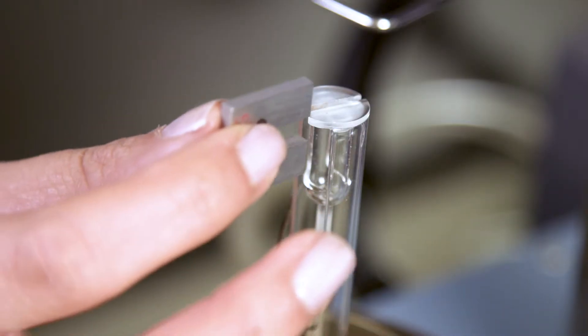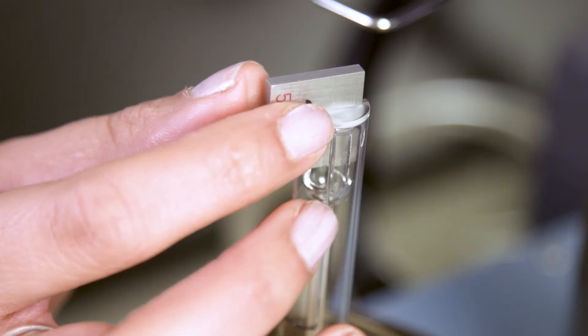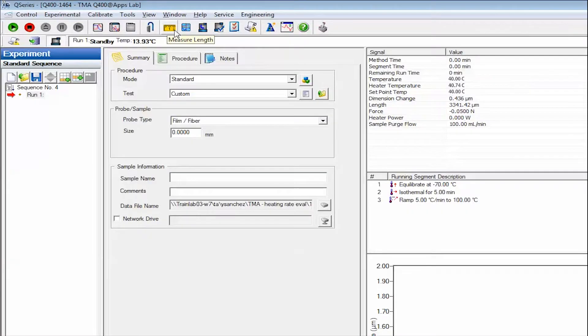Slide the calibration fixture around stage and prop. Press the Measure Length key on the toolbar. Record this value as the display size.